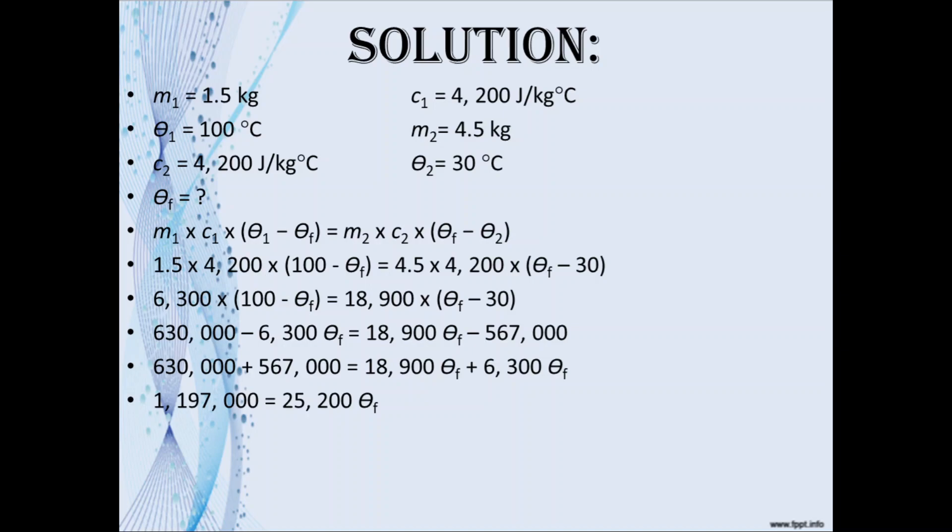Adding, we get 1,197,000 equals 25,200θf. So θf would be 1,197,000 divided by 25,200, which gives you 47.5 degrees Celsius. So it would be a nice warm temperature of 47.5 degrees Celsius that Zakiya is used to when bathing with the electric heater.